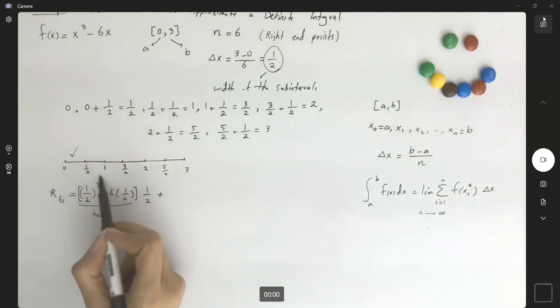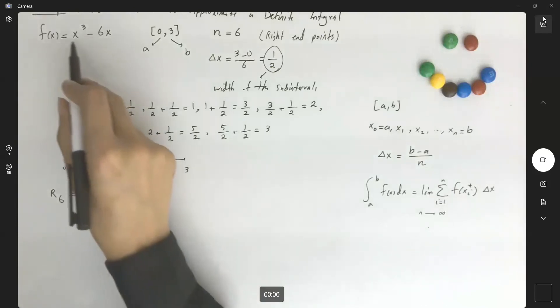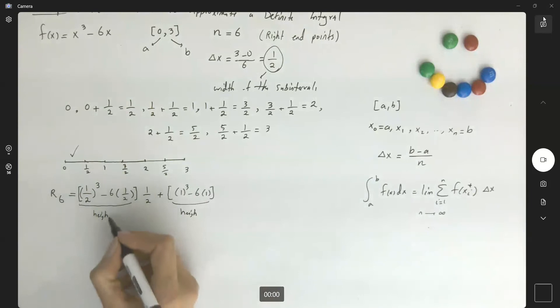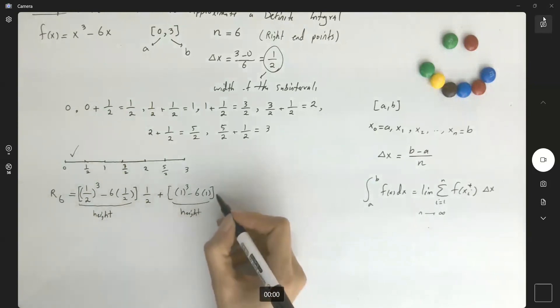For the second subinterval, the right endpoint is 1. So you're going to enter 1 into the function to find the height. So here you have 1 to the third minus 6 times 1. This is your height of the second subinterval times its width, which is a half, plus.